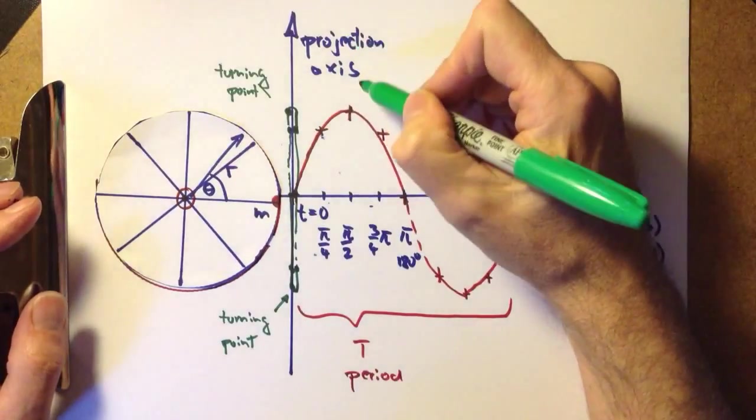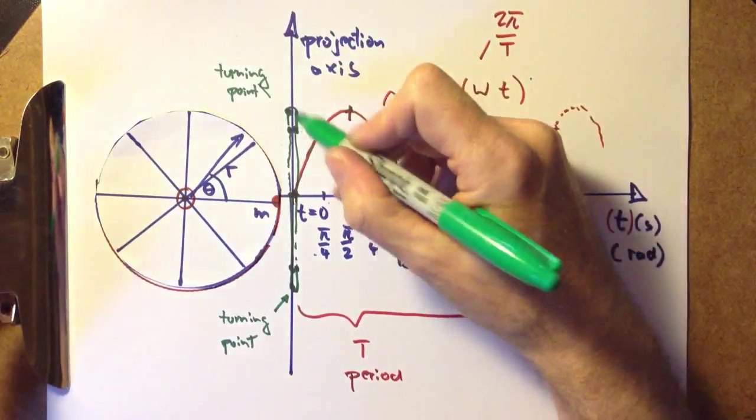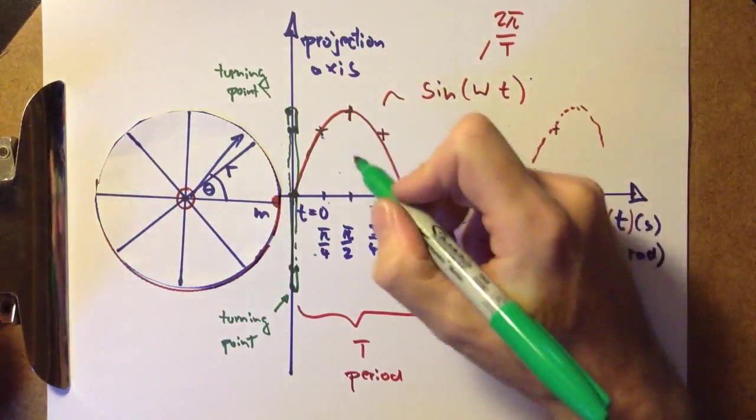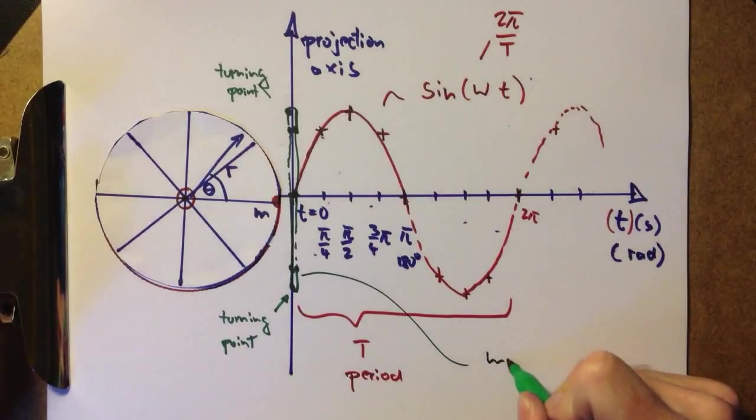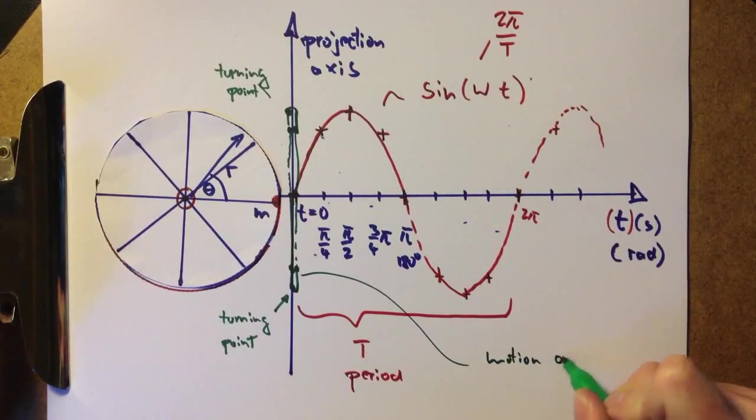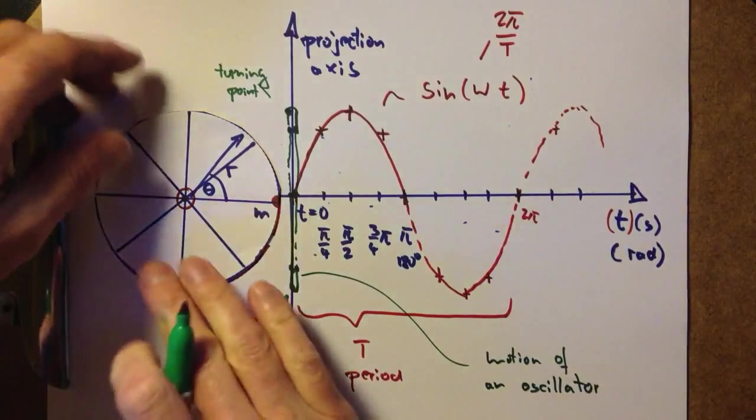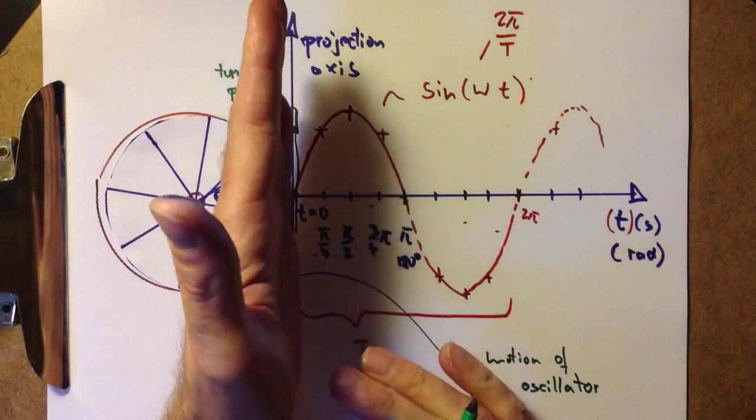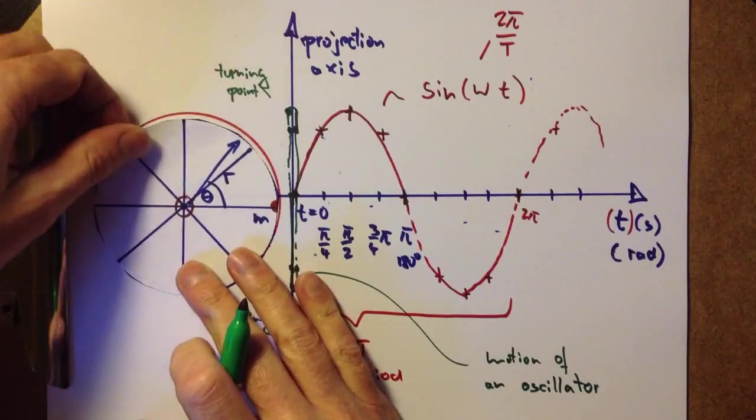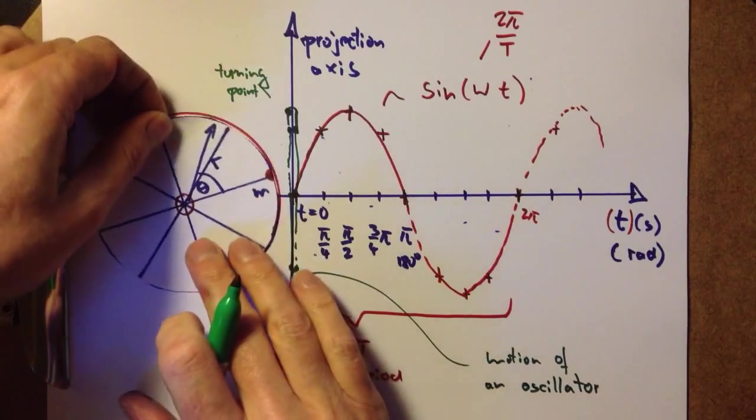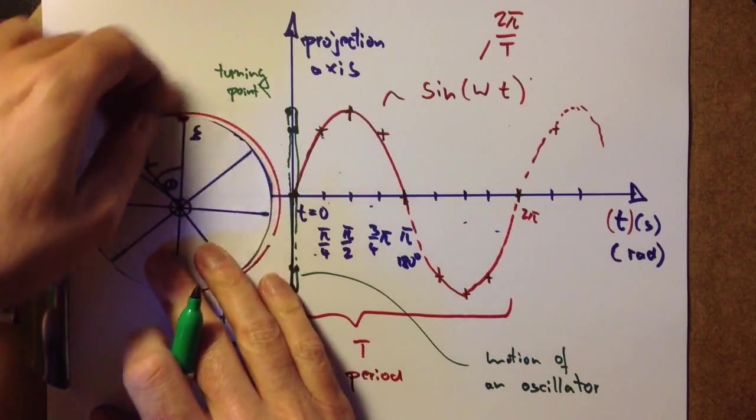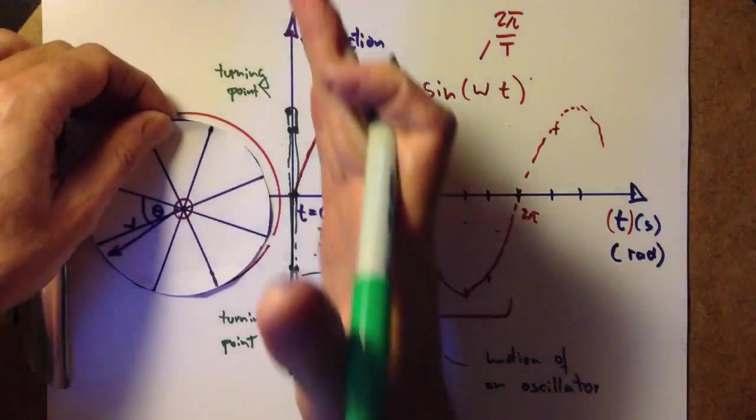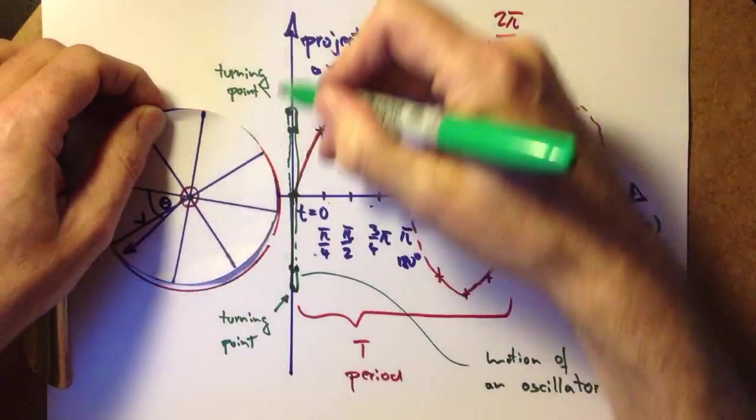So what we have here on the projection axis is the motion of an oscillator. Now you can see what I mean by ironing the circle onto a flat surface. That's exactly what we have here. We're projecting out the circular motion of the point mass onto the flat surface, and that gives us an oscillation.